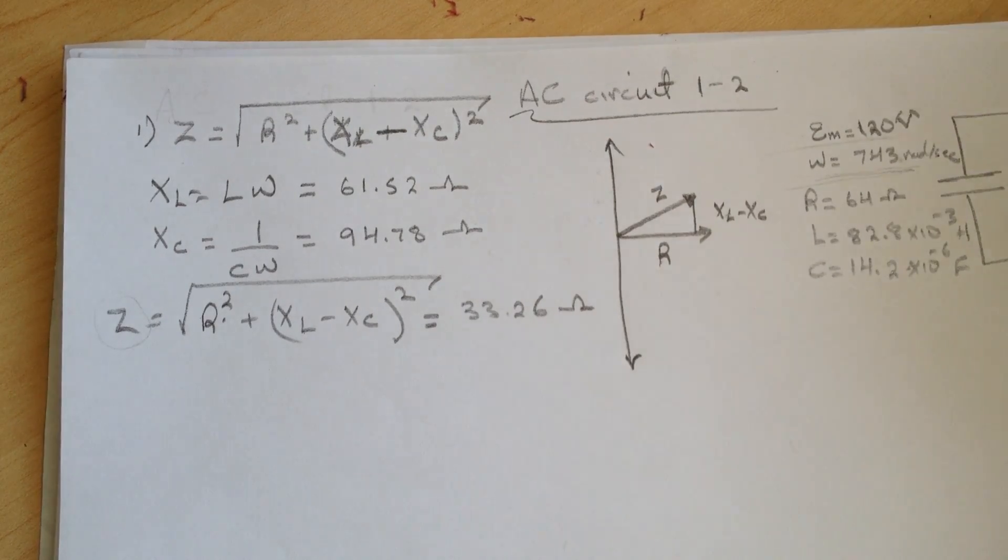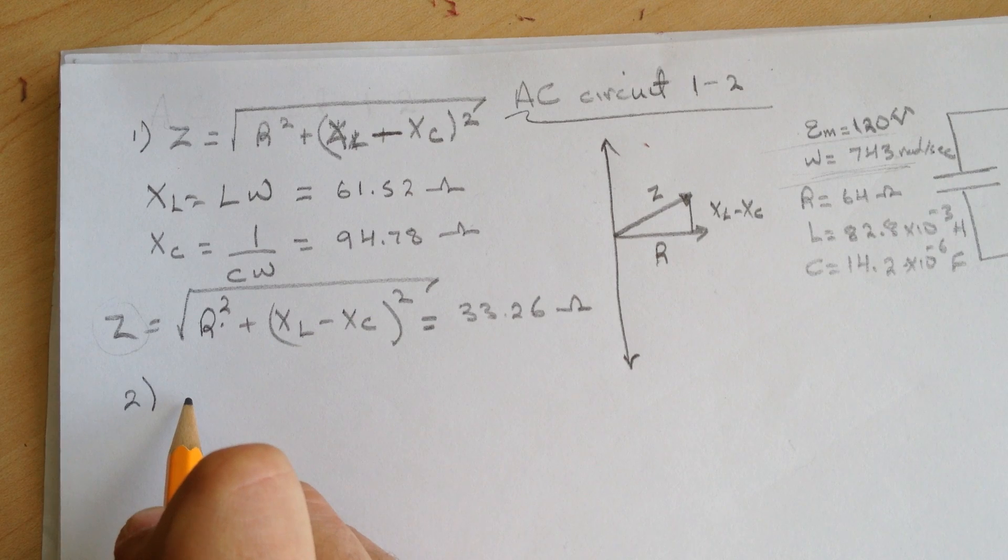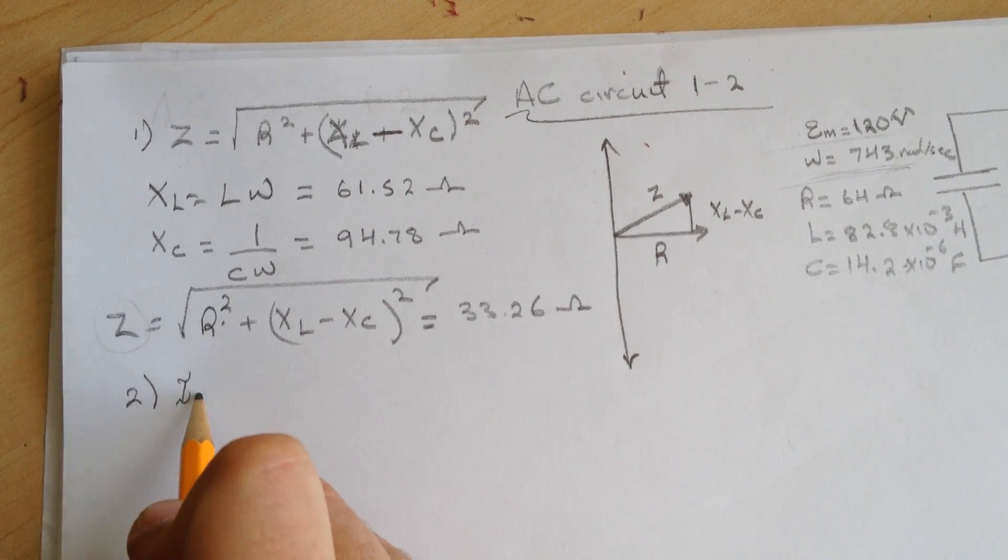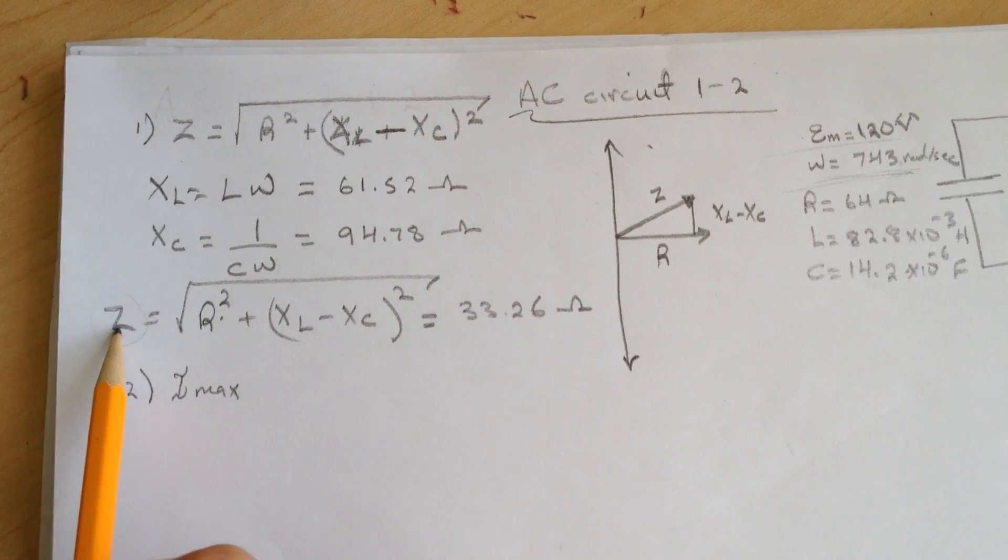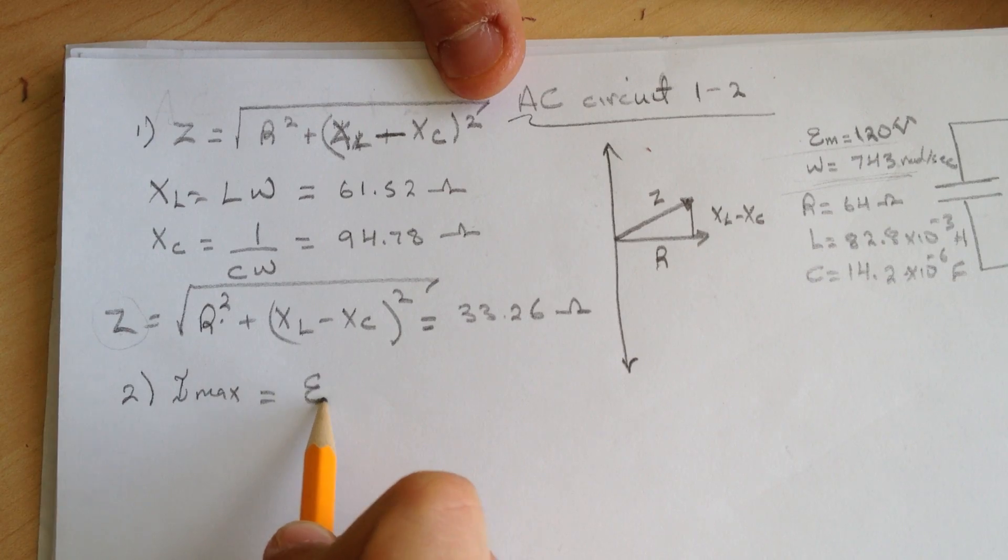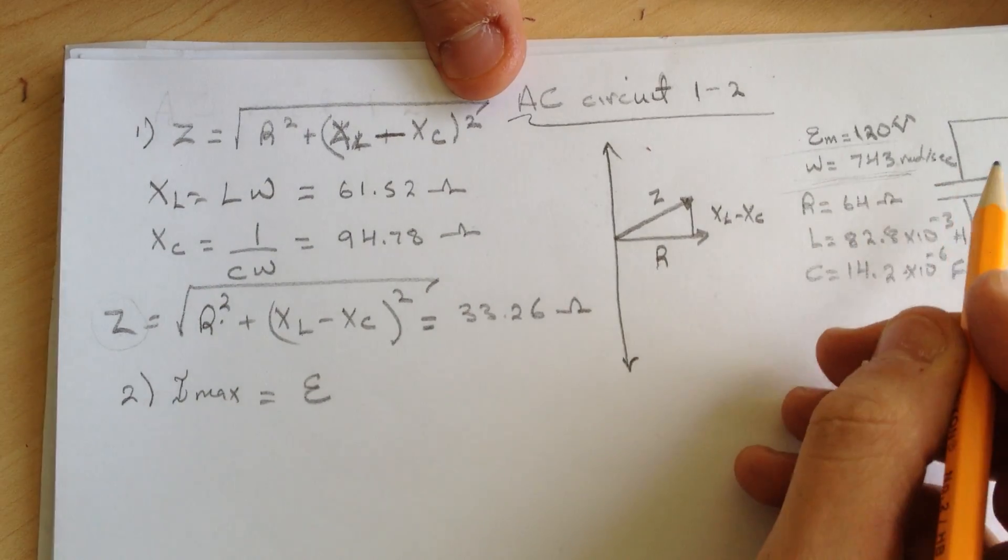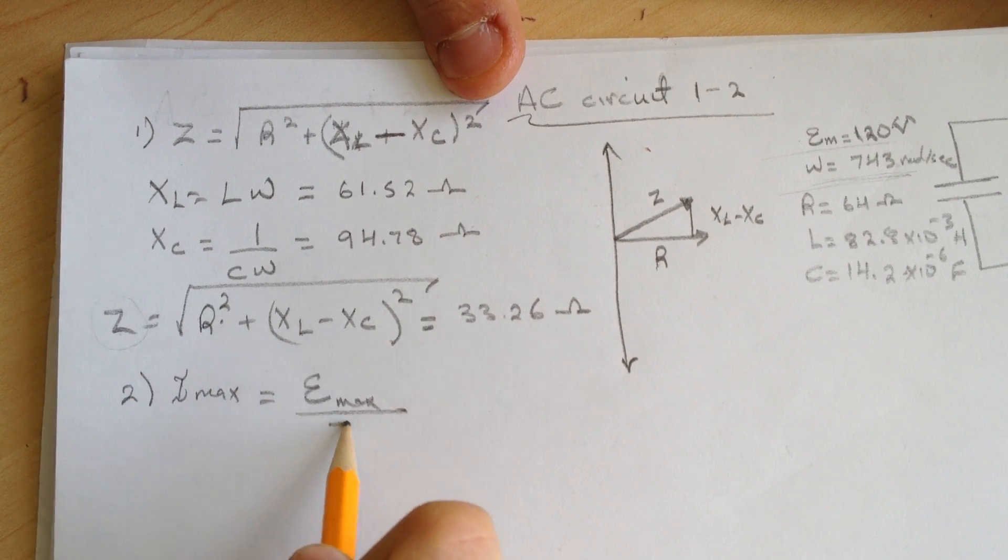The second question is asking, number two, what is the Imax of the circuit? So since we have the impedance, we can calculate the Imax by dividing the voltage of the generator divided by the impedance.